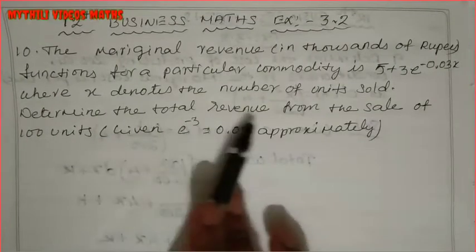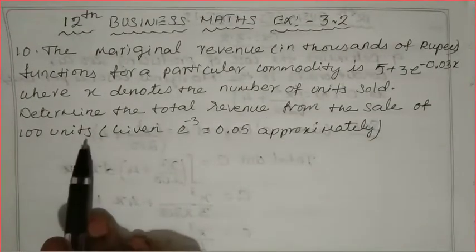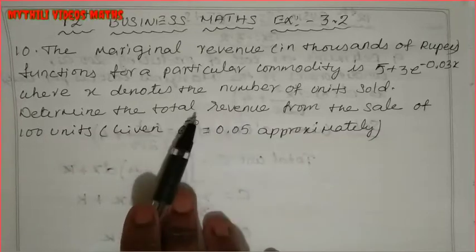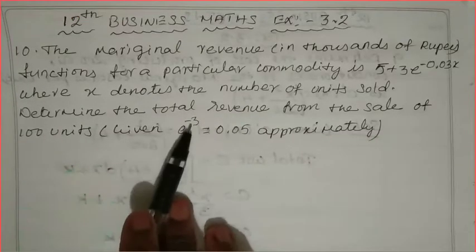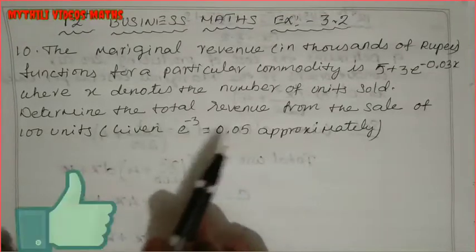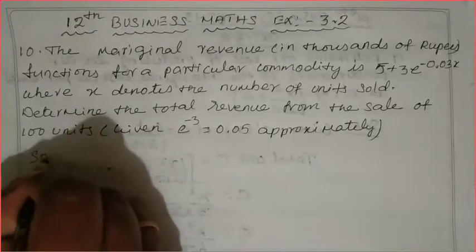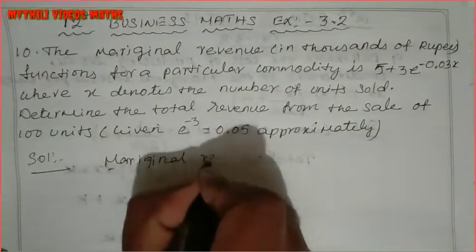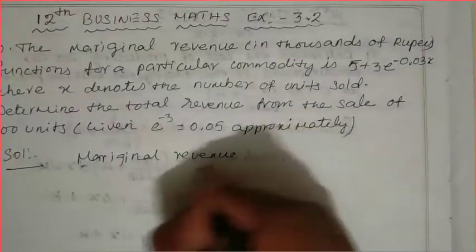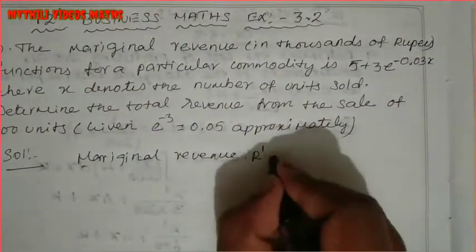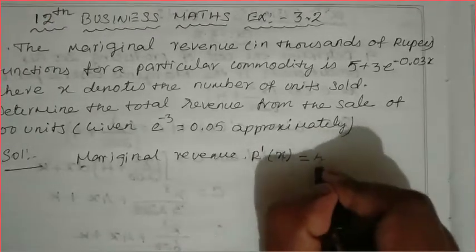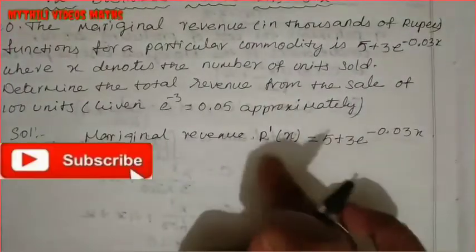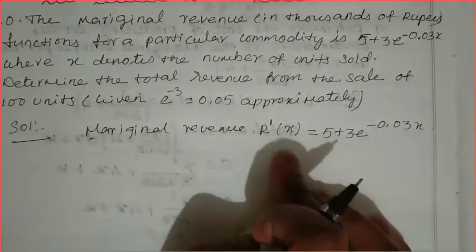Determine the total revenue from the sale of 100 units. If we have total revenue — similar to previous sums on total cost — this is the total revenue. If we have given e power minus 3, we will get the value. So first, this is the marginal revenue, and this is the total revenue.